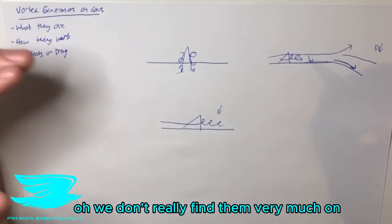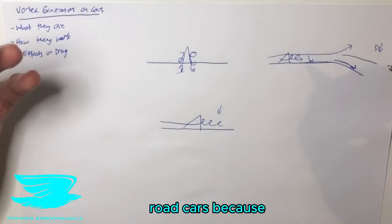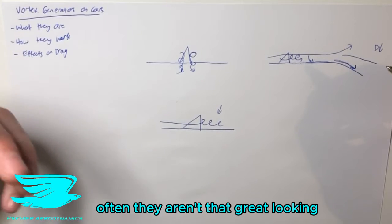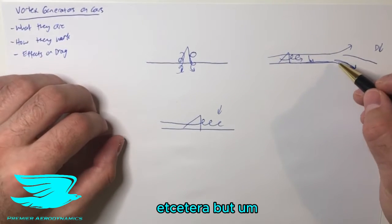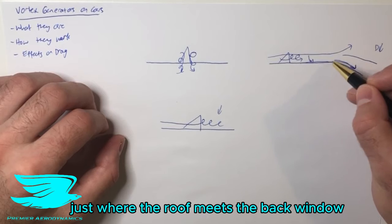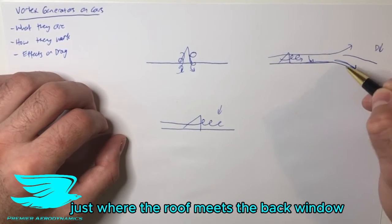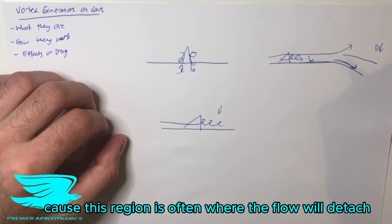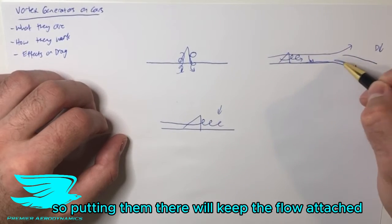We often find them—or we don't really find them very much on road cars because often they aren't that great-looking. But often, if we were to use them, we'd put them on the back, just where the roof meets the back window, because this region is often where the flow will detach. So putting them there will keep the flow attached.